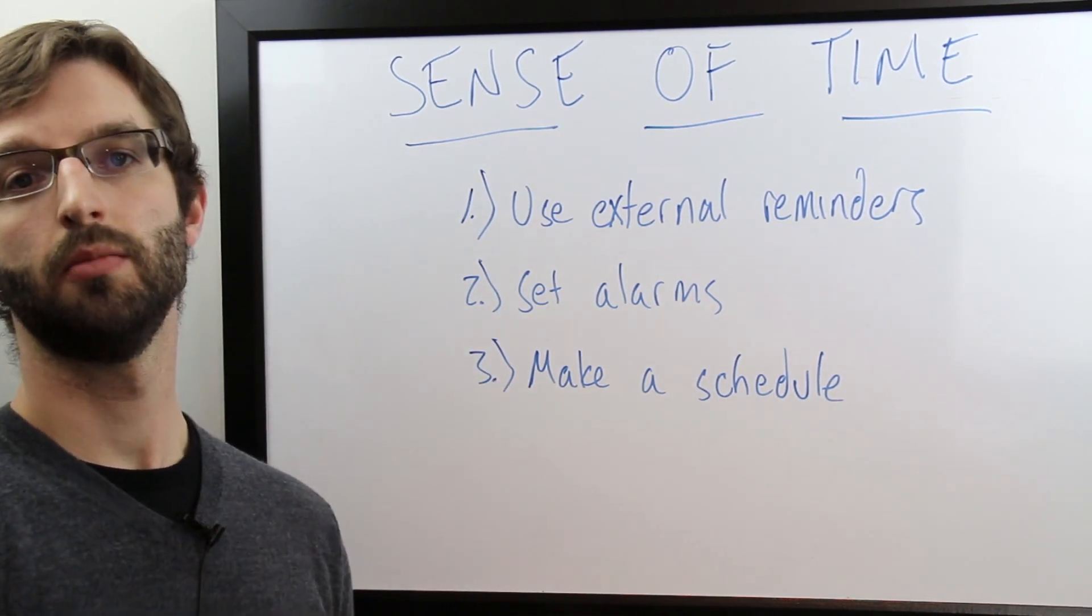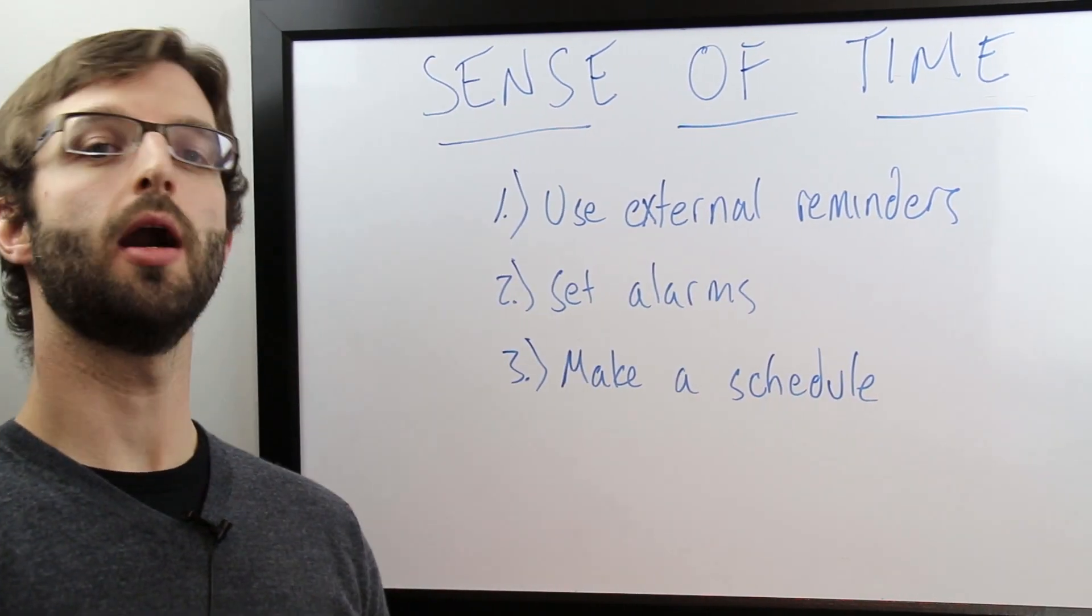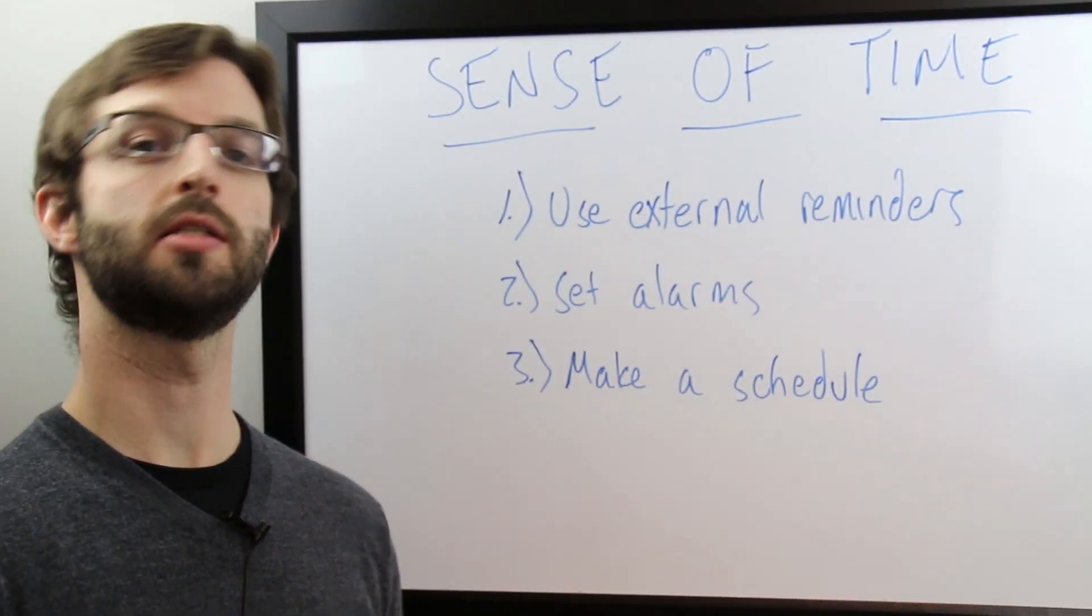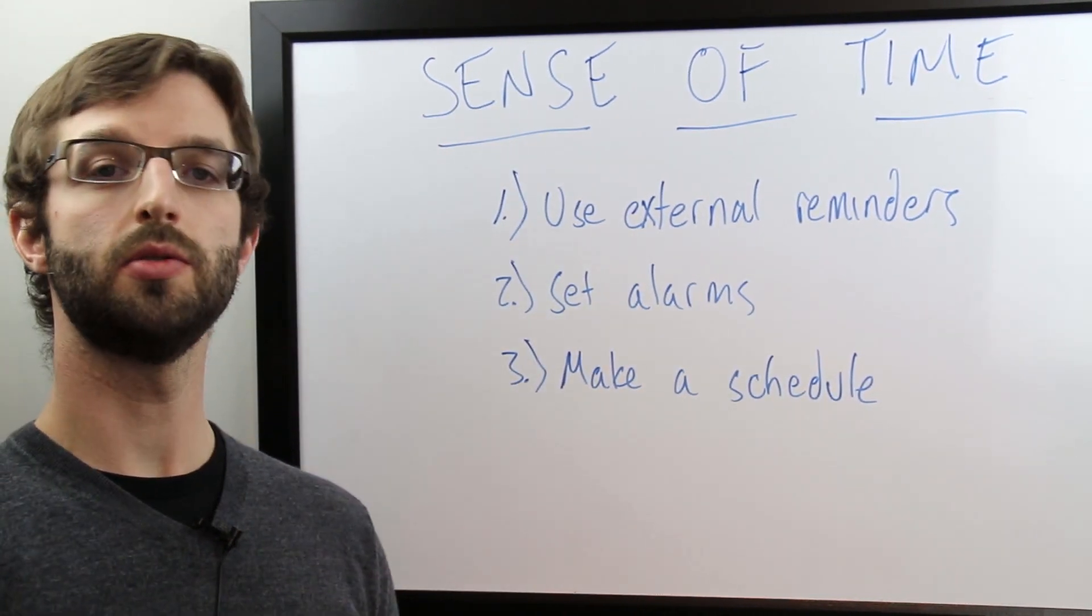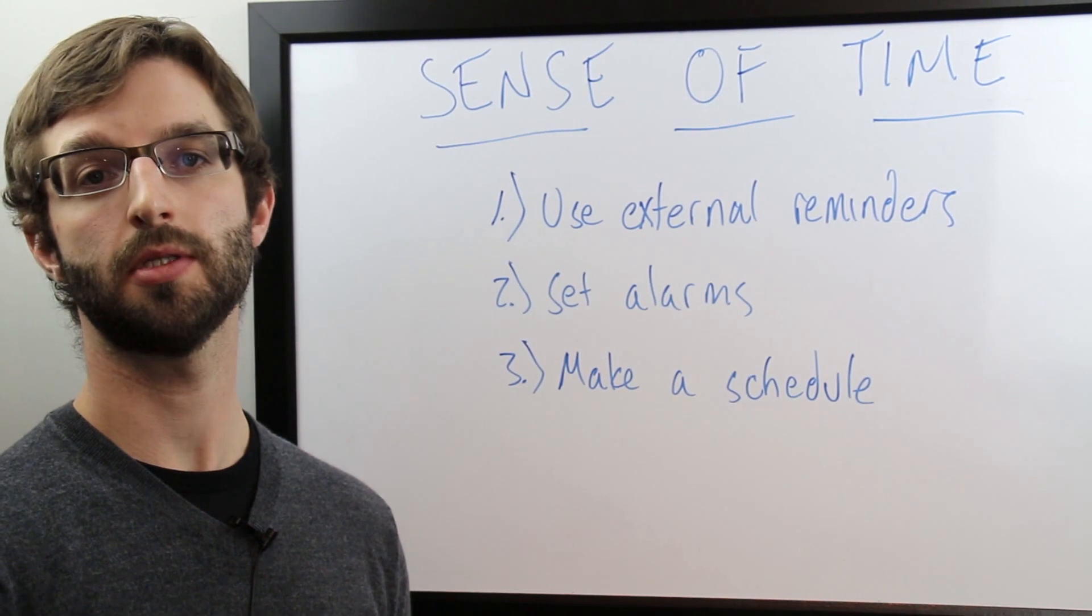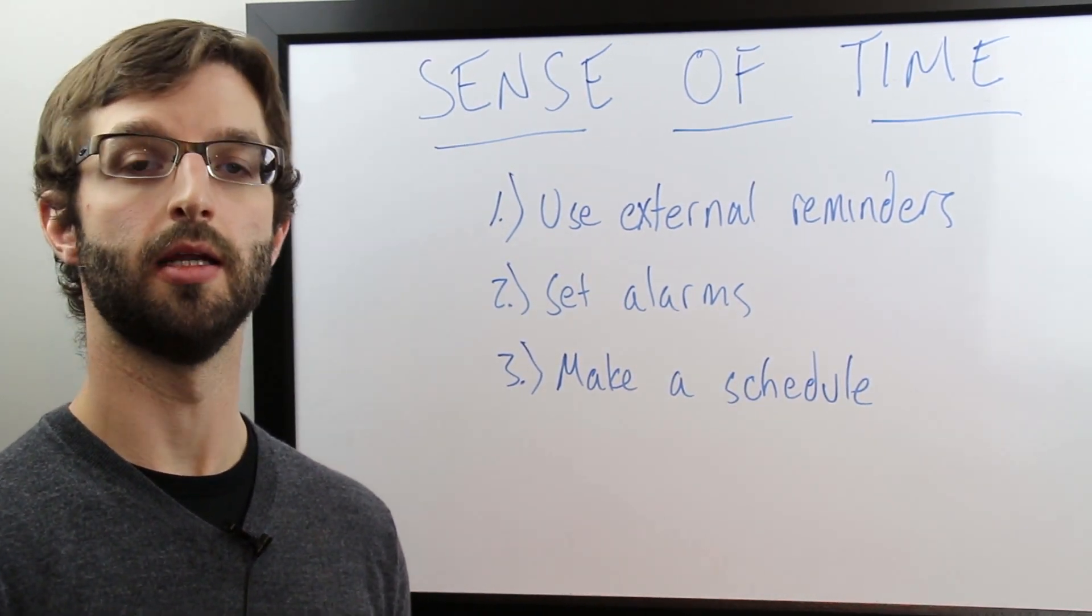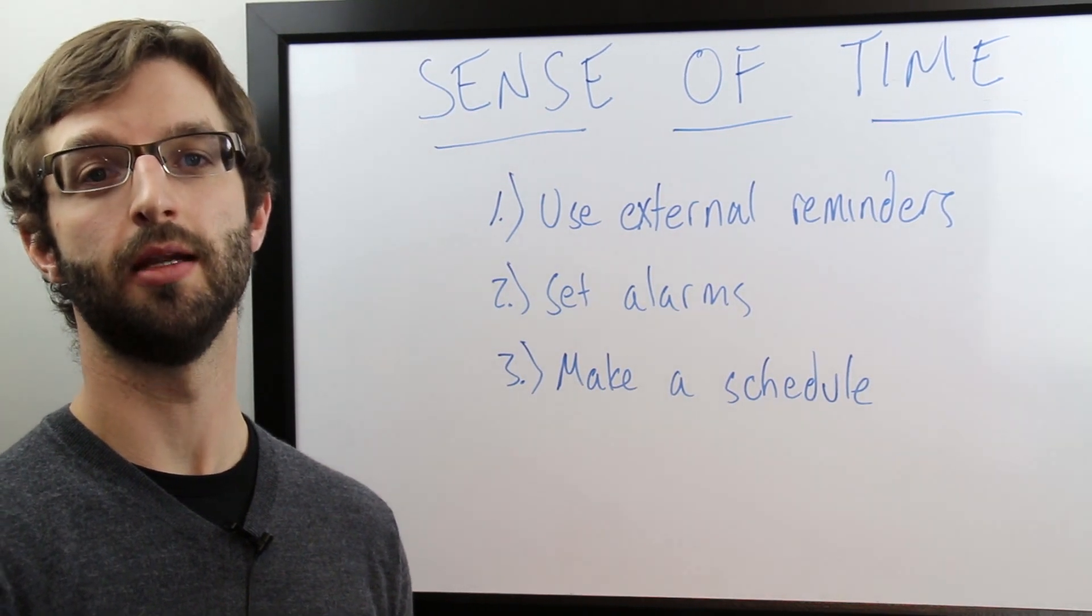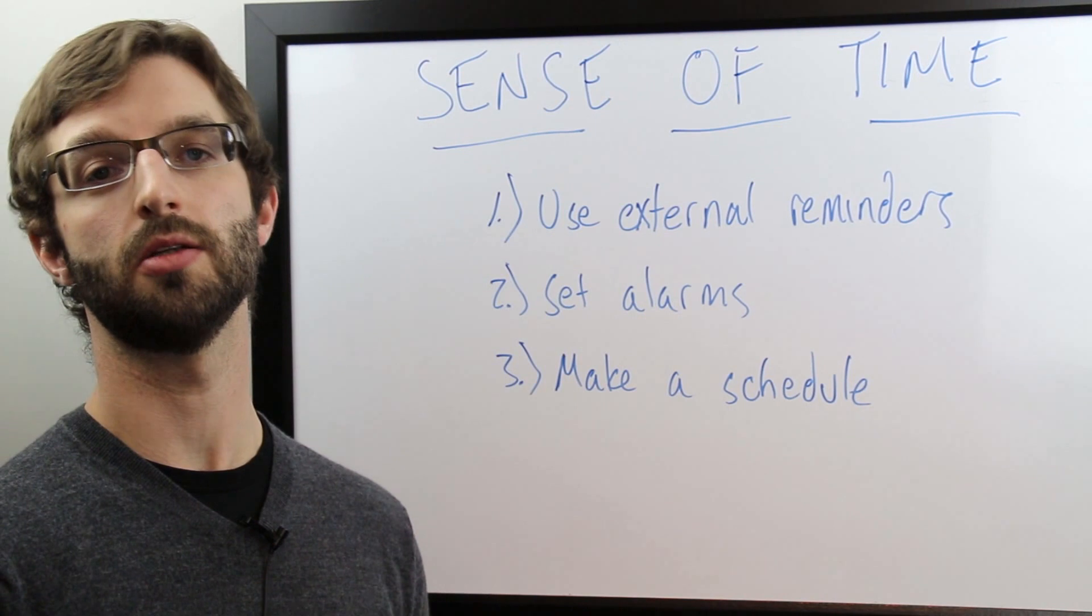Use external reminders. Put clocks everywhere. Wear a watch. Set alarms. Use your iPhone or iPod to set reminders of activities you want to be doing or starting throughout the day. And finally, make and use a schedule. I recommend a paper schedule, something you can carry with you. Make sure you check it regularly. Update it. Always check it before you commit to anything. And remember to estimate time and a half to double time how long you think things are actually going to take.